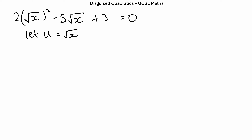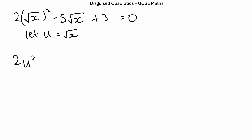If root x is equal to u, then root x squared should equal u squared. Because if we have root x squared, that's going to be the same as u squared. So, we're going to have 2u squared — and u replaces root x — so minus 5u. And there's no root x in the last term, so it just becomes plus 3. Now we just have our normal quadratic equation.